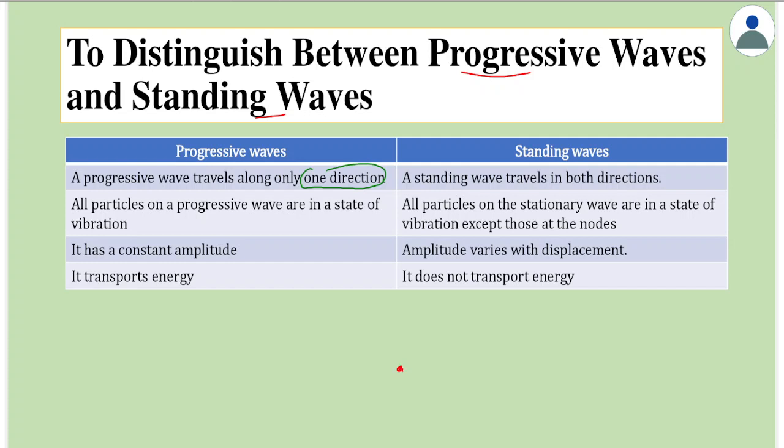From a given disturbance, the energy will keep on traveling or momentum will travel, the energy will not come back. That is the meaning of a progressive wave. The energy will keep on traveling away from the source but will not return to the source.